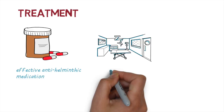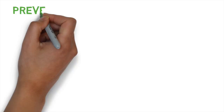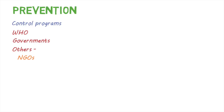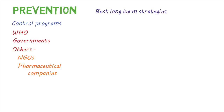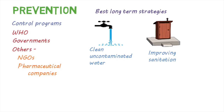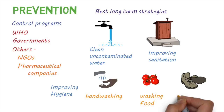Over the years, there have been sustained control programs led by the World Health Organization, national governments, and with the help of non-governmental organizations and pharmaceutical companies. The best long-term strategies to prevent soil-transmitted helminth infections are having clean and uncontaminated water supplies and improving sanitation, such as providing appropriate toilets and effective sewage disposal systems. Hygiene practices such as hand washing, washing food, and not walking barefoot will also prevent people from being infected.